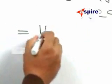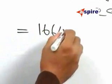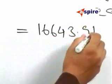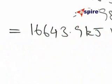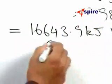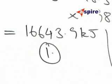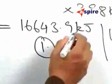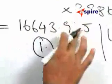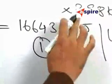You will get 16643.9 kilojoules. And if you look at the options, option 1 corresponds to this delta G0 value, or rather this must be in joules, not kilojoules.